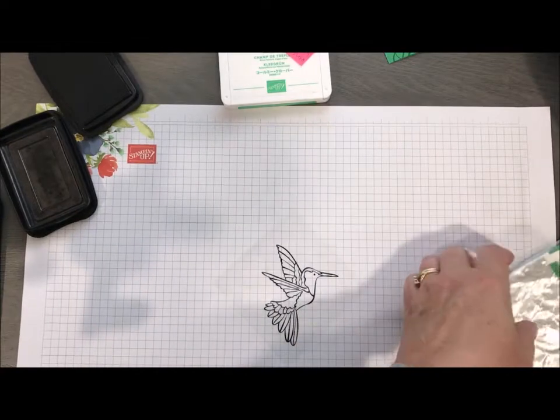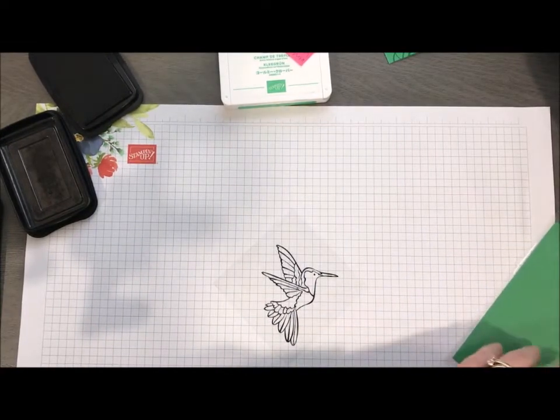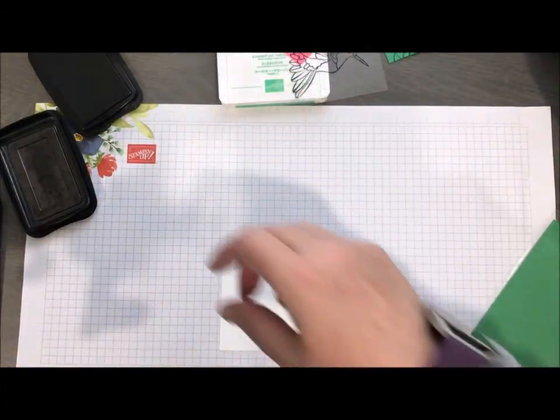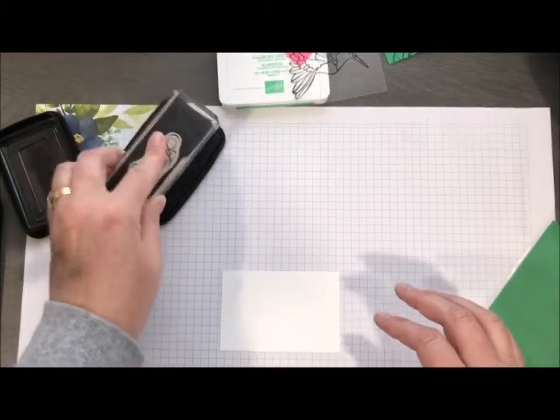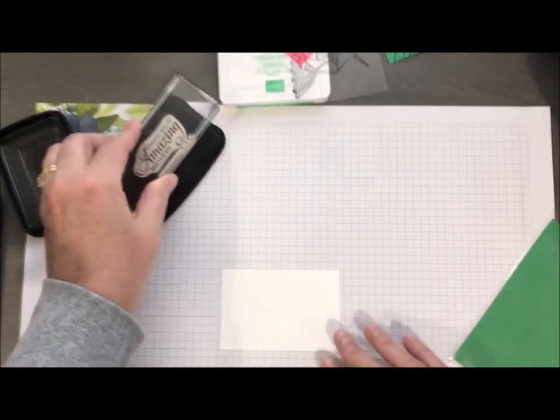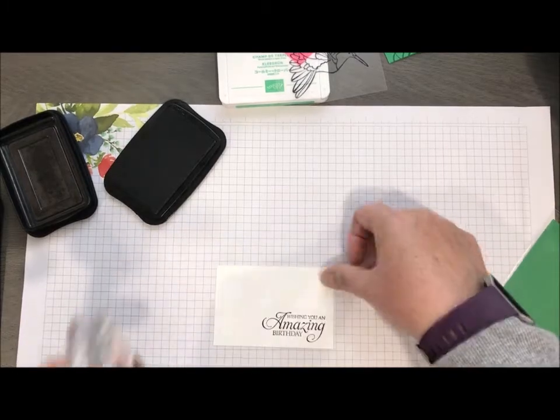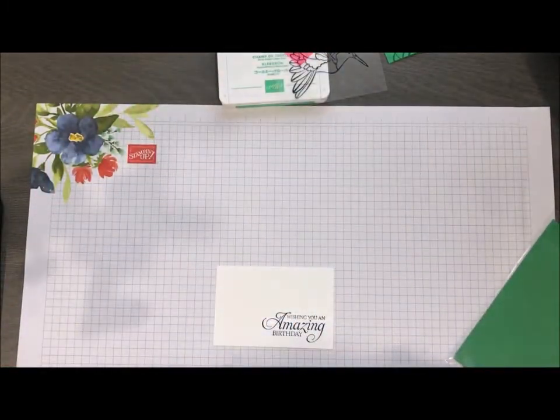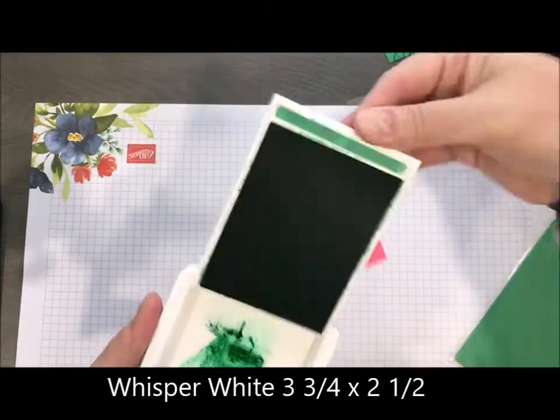While I have the ink out, let's go ahead and stamp my sentiment. You do want to give a couple seconds to dry, it doesn't take real long, but just don't rush it because you need to flip it over. So I want to do my stamping while we let that dry. I'm just going to stamp my sentiment on here and then we're good with the Stazon.